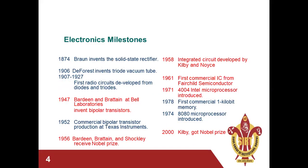These are some milestones in the electronics field. In 1874, Braun invented the solid-state rectifier. In 1906, De Forest invented the triode vacuum tube. From 1907 to 1927, the first radio circuits were developed from the diode and triode. In 1947, Bardeen and Brattain at Bell Labs invented the bipolar transistor — the first time electronics and communication operations came into existence. In 1952, the commercial BJT was developed at Texas Instruments.